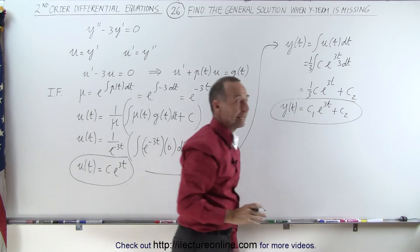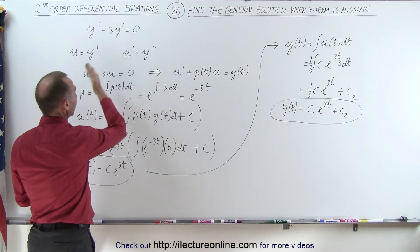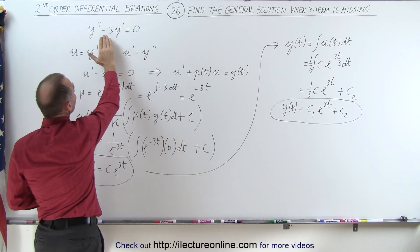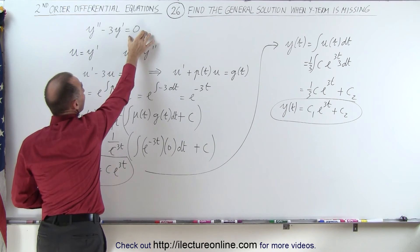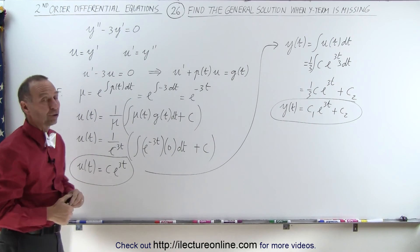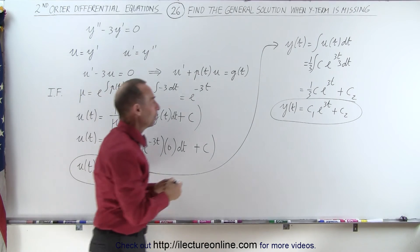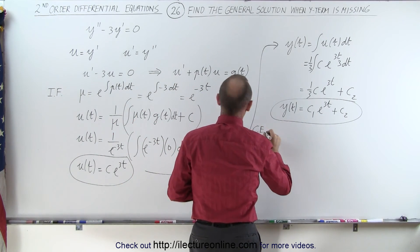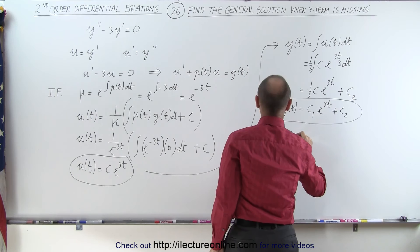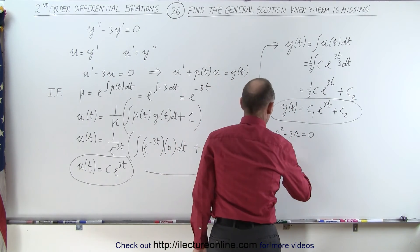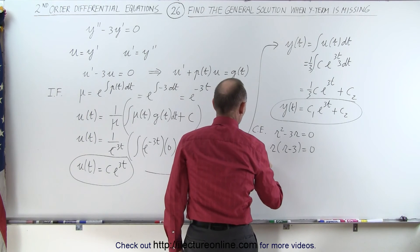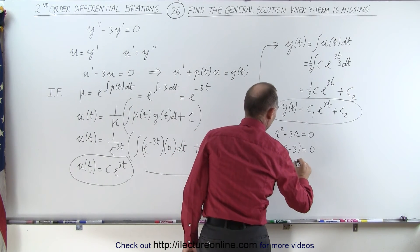You may ask why go through all this trouble with the substitution and first-order method. The reason is that this approach works for the more general case where there are non-constant coefficients and a function on the right side. Now, just to show you this could have been solved more easily, we take the characteristic equation: r squared minus three r equals zero. Factoring gives r times r minus three equals zero, so the two roots are r1 equals zero and r2 equals three.